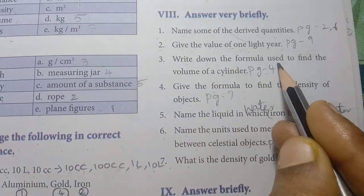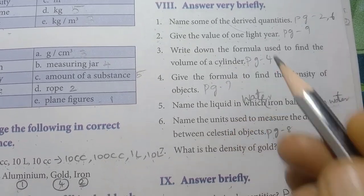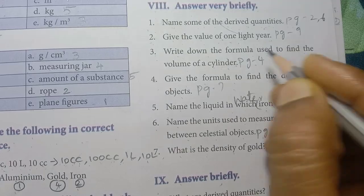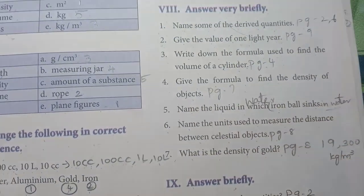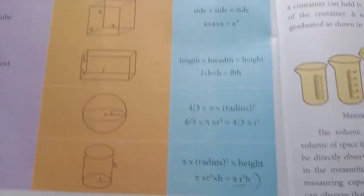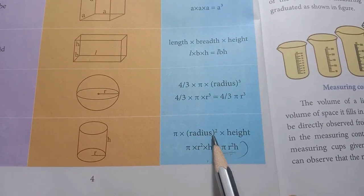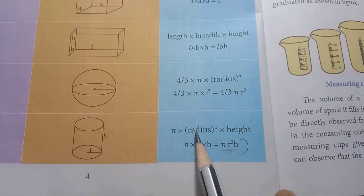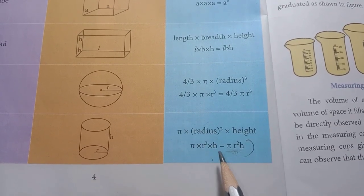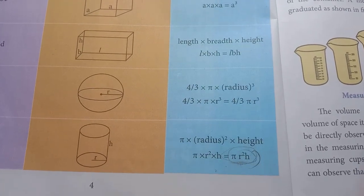Third: write down the formula used to find the volume of a cylinder. Page number 4. The formula for volume of a cylinder is pi into radius square into height. So the formula is V = πr²h.